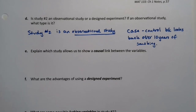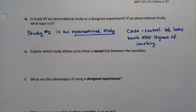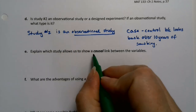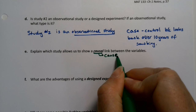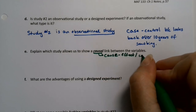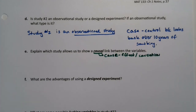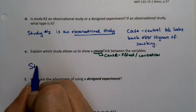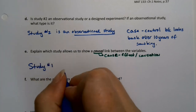Which study would allow a causal link? Causal — cause and effect, causation. The answer is study number one, because study number one is an experiment. Cause and effect can only come out of experiments.